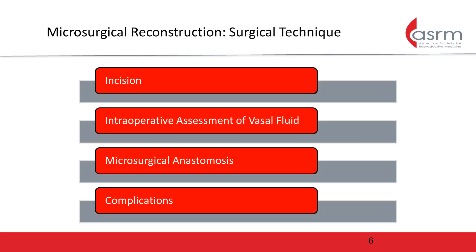Once the decision is made to proceed with microsurgical reconstruction for both VV and VE, the typical approach is via a 2-3 cm scrotal incision. However, either an inguinal approach or the use of laparoscopic or robotic assistance may be appropriate in some settings. The vas deferens is then identified and mobilized. Vasal fluid should be assessed intraoperatively, and if the vasal fluid does not contain sperm and has a thick, creamy consistency, a VE should be performed.